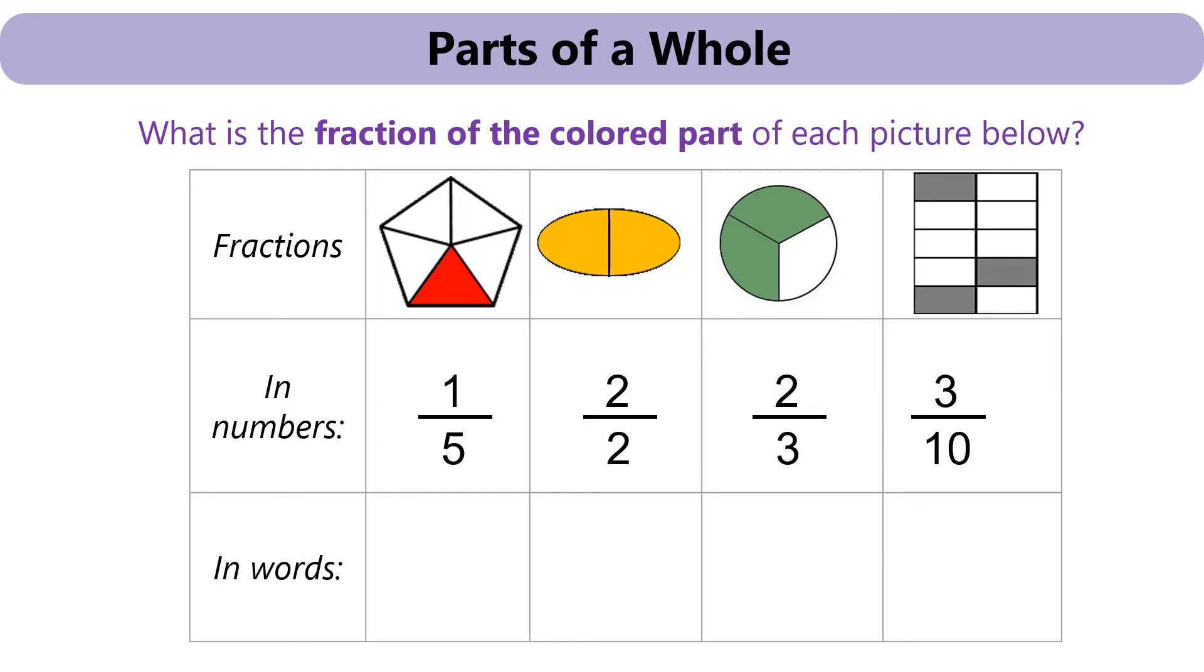How to write them in words. So the first one is easy. We just say one fifth. Second one is two out of two. We can write two halves or we can simply put one whole. Because the whole picture is being colored. The whole shape is colored. Next one. We start with two. We say two. Number three represents thirds. So we write two thirds. Last one is we write three first. And then the following number is tenth. Three tenths.